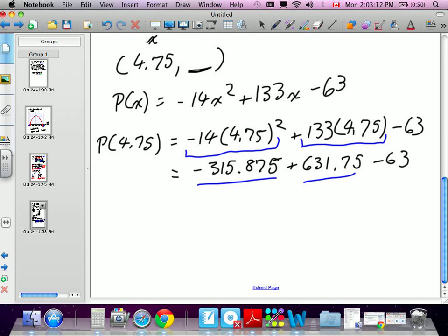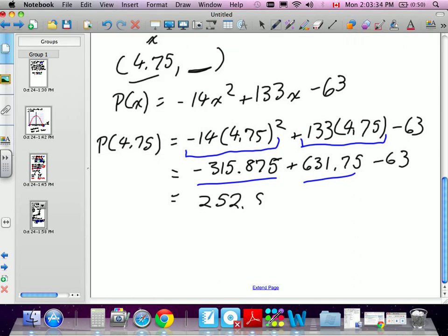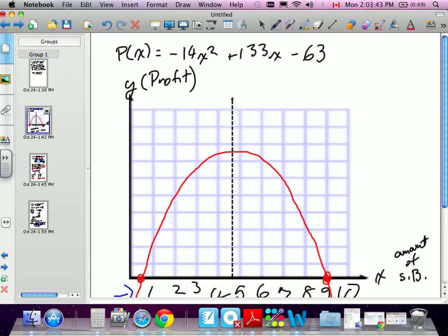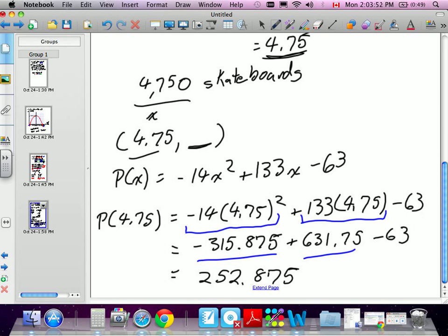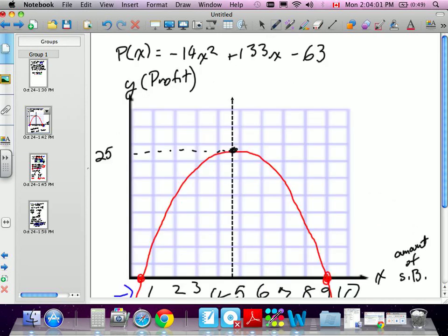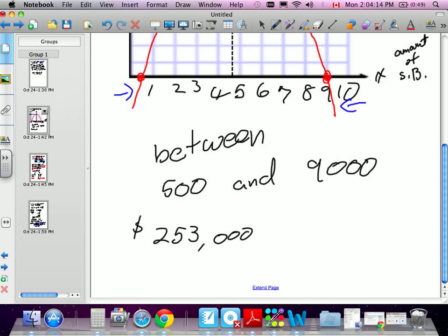We're finding the y-value of the vertex. We already know the x, we're going to find the y now. And we add these numbers together. Minus 315.875 plus 631.75 minus 63 equals 252.875. And we're going to say profit is in the thousands also. So this value here, our vertex, let me write it down. 252.875, we're going to round this to 253. That's where the vertex of this equation is, and it's also in thousands. So how much money do they make at their most profitable? 253,000 dollars of just profit.